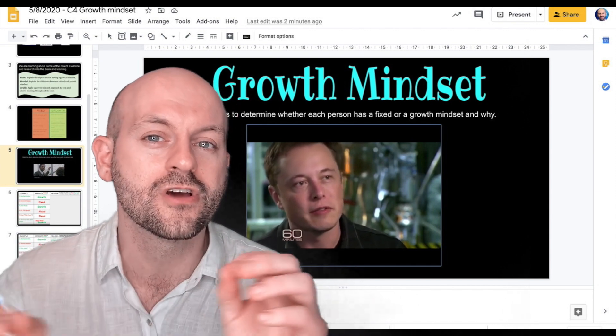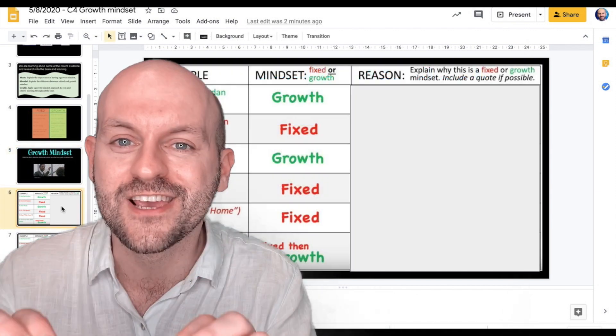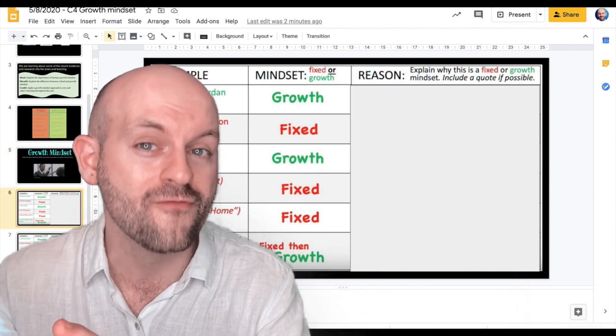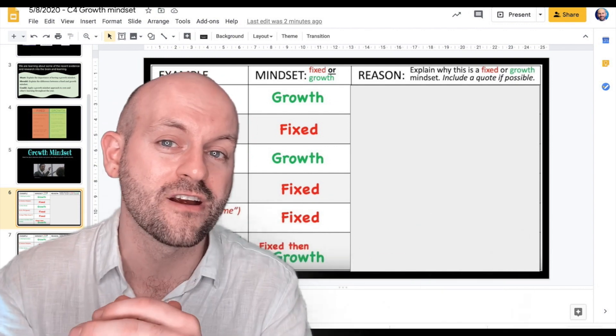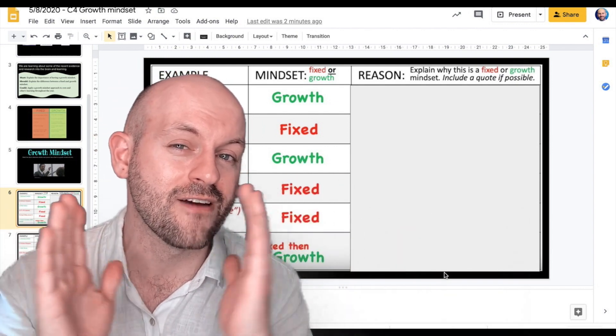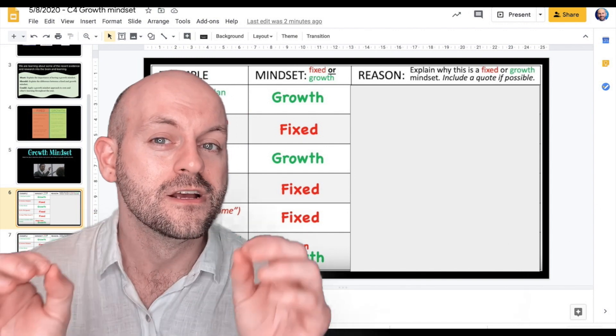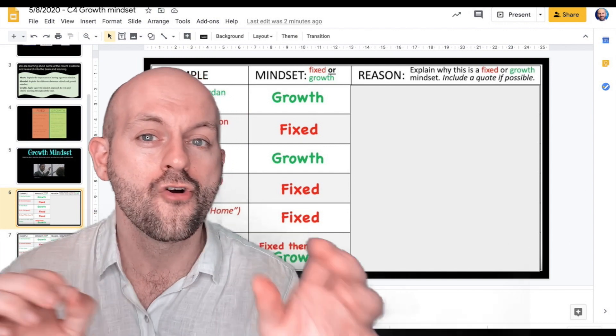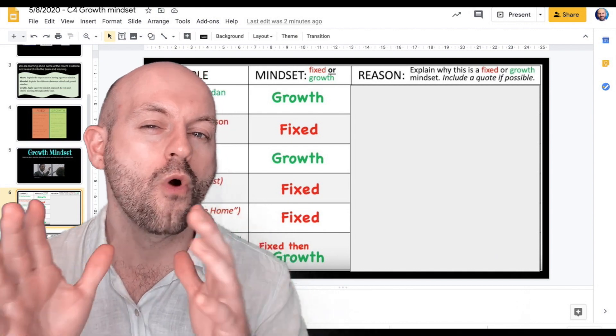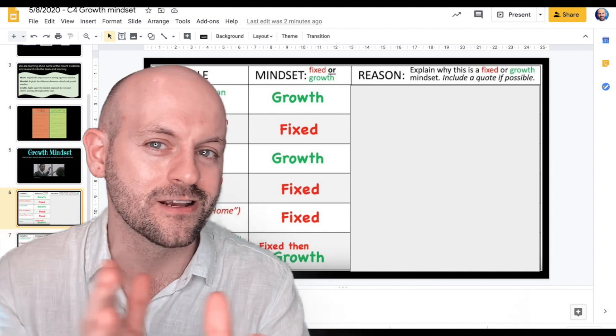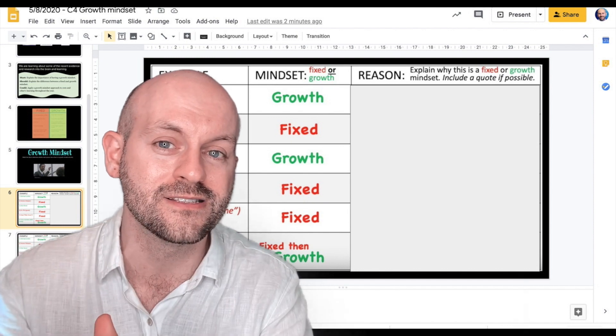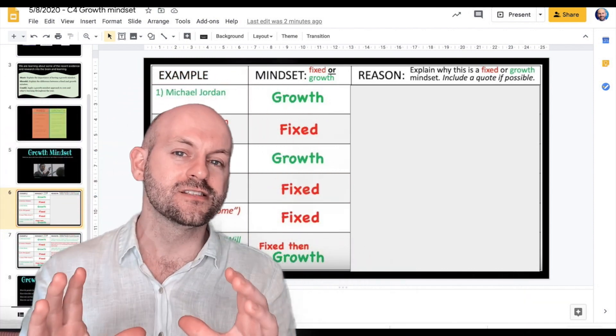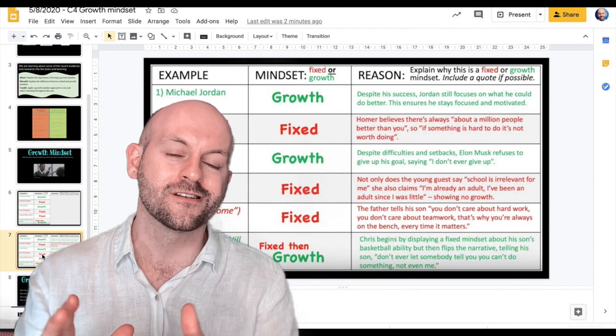And after watching the video, you can look at this table to see which characters were demonstrating growth mindset and which characters were demonstrating that fixed mindset. Just grab a piece of paper, write down for yourself why you think these particular characters were demonstrating one of the two mindsets. And then you can check for yourself the answers on the following slide.